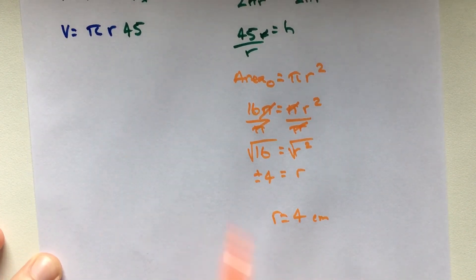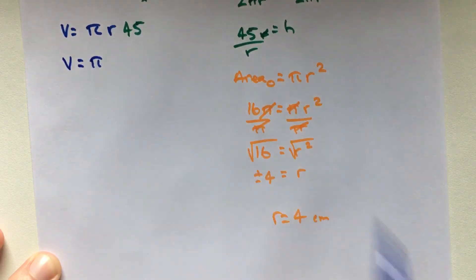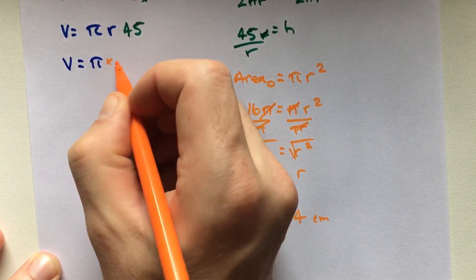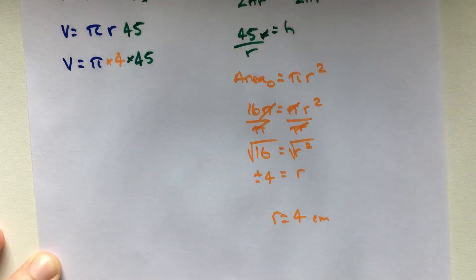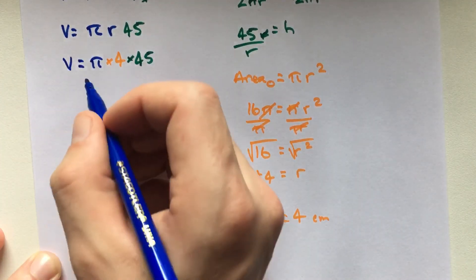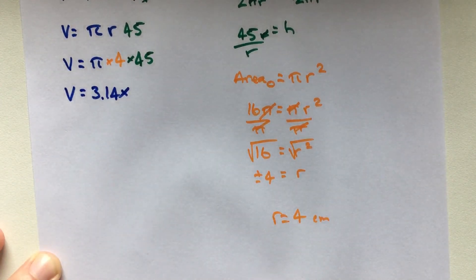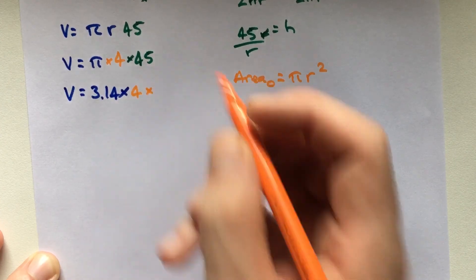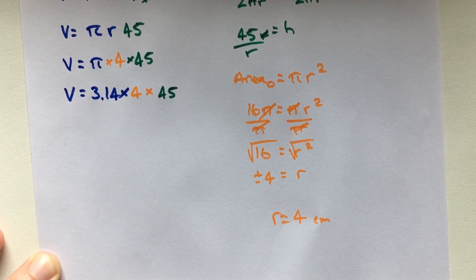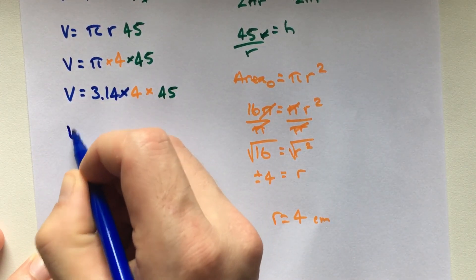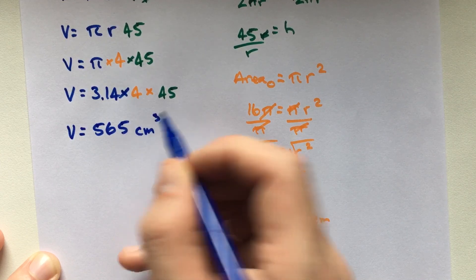So we can take that and plug it back into our formula. So volume equals π times my radius, which is 4, times my height, which is 45. We know π is 3.14, so let's go ahead and rewrite it again: 3.14 times 4 times 45. Multiply all those together and we're going to get a rough answer of about 565 cubic centimeters.